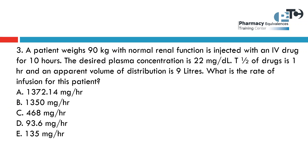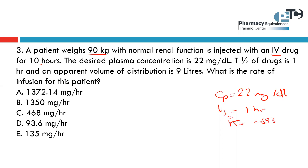One calculation problem: a patient weighs 90 kg with normal renal function and is injected with an intravenous drug for 10 hours. The desired plasma concentration is 22 mg per deciliter, and the T-half is one hour. Directly when we have T-half, we can calculate K, which is 0.693 over 1, equal to 0.693 hour⁻¹. The volume of distribution (Vd) equals 9 liters. The question asks about the rate of infusion, R, in milligrams per hour.